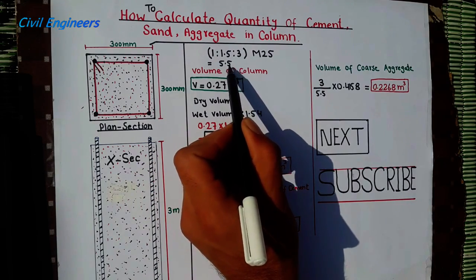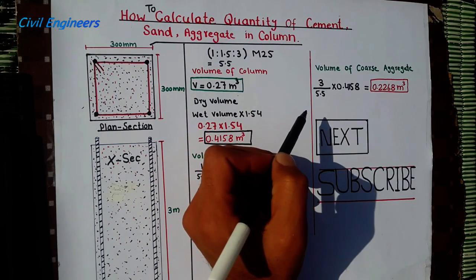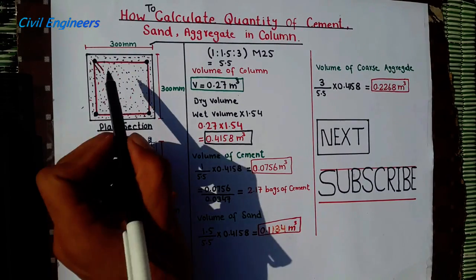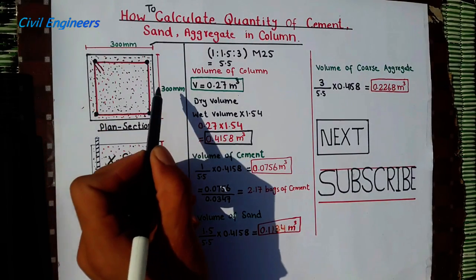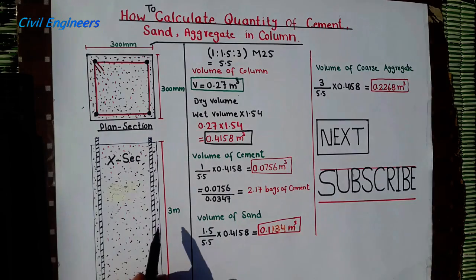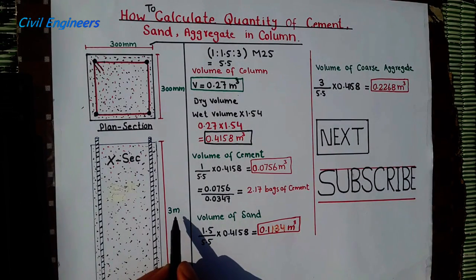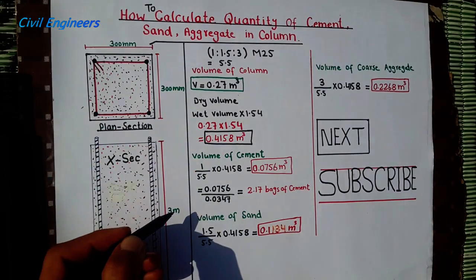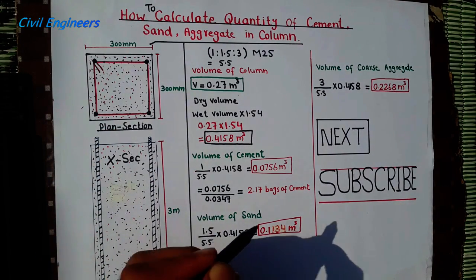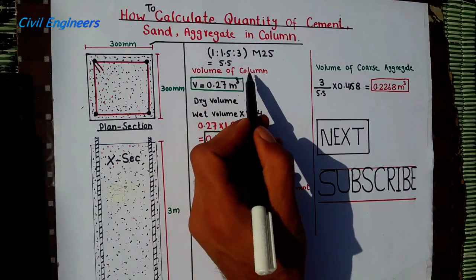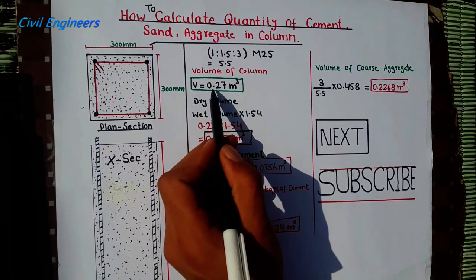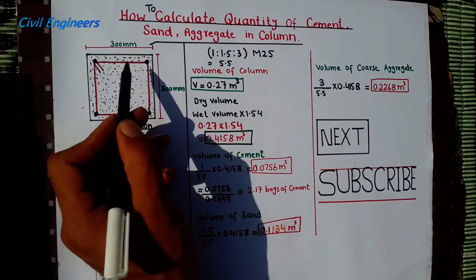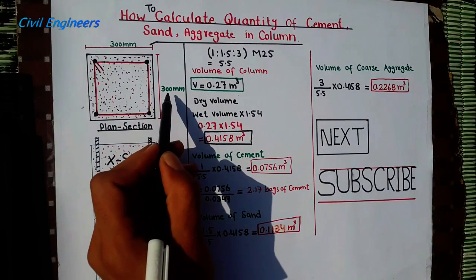The sum of the ratio becomes 5.5. Now I want to find the volume for this column, which has dimensions of 300 mm by 300 mm and a height of 3 meters. When you multiply these three dimensions together, it gives you the volume for the column: V = 0.27 meter cube.